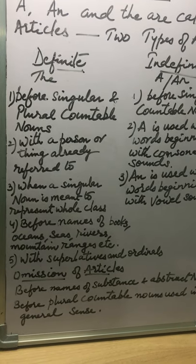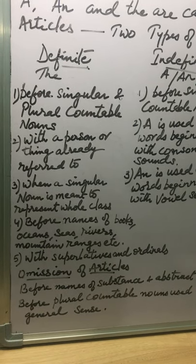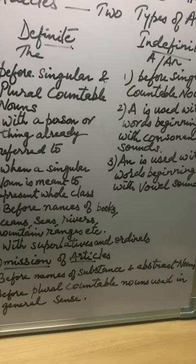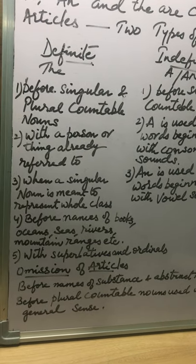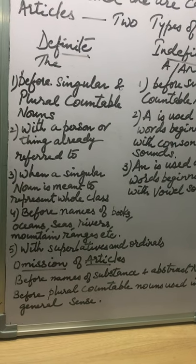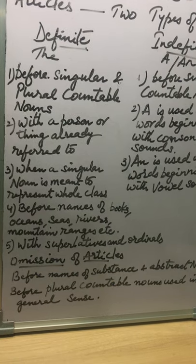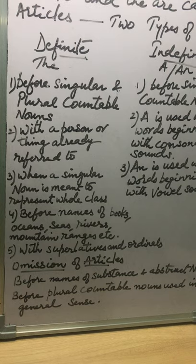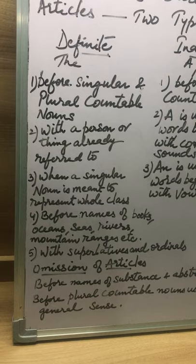Sometimes uncountable nouns take 'the' when used in a particular sense — for example, 'would you pass me the sugar?' or 'the wisdom of Solomon is great'. Before plural countable nouns, we generally omit the article — for example, 'children like chocolates' (not 'the children like chocolates'), or 'computers are used everywhere' with no article before 'computers'.